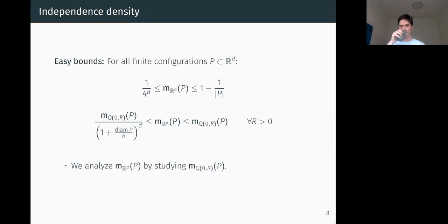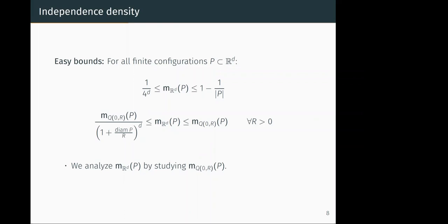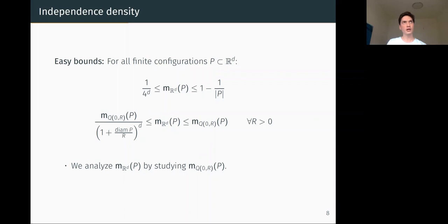Audience question: what if we use domains other than cubes? Answer: for the full independence density on Euclidean space, it probably doesn't matter as long as the domain is convex and has non-empty interior, but it would be harder to prove the convergence relationship. It doesn't really matter in the end.